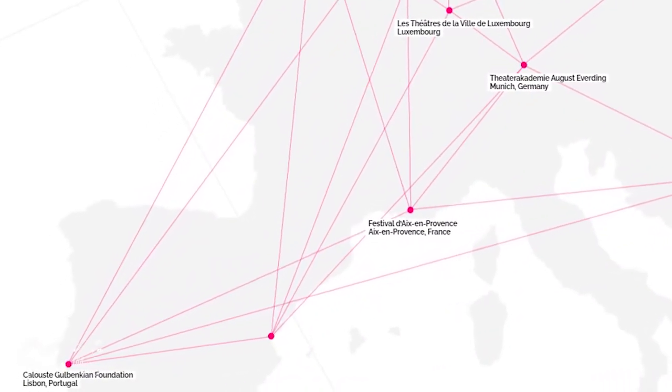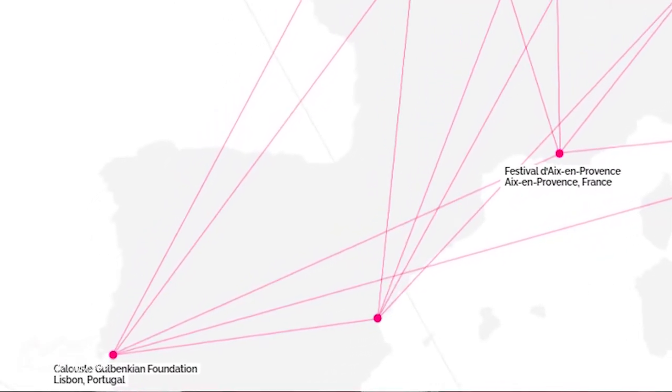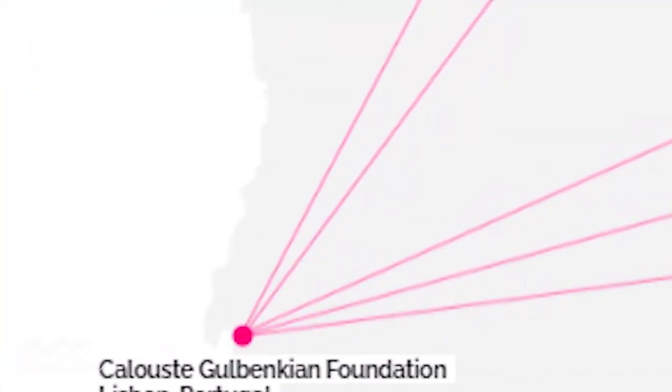We got selected! We have an operatic company in Lisbon that wants to help us write this opera, which is amazing. I'm very ecstatic and I can't wait to write it. It is the Calouste Gulbenkian Foundation in Lisboa — it's a Portuguese institution dedicated to the promotion of the arts, philanthropy, science, and education. They want to help us write our opera.